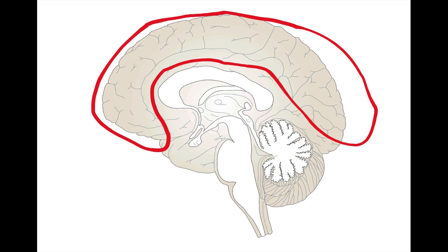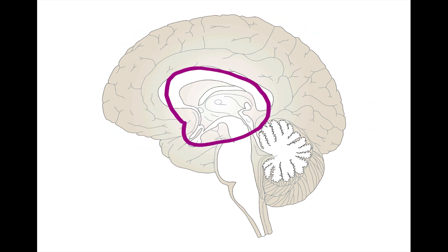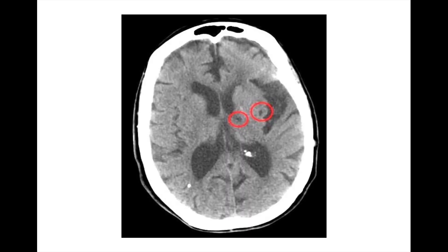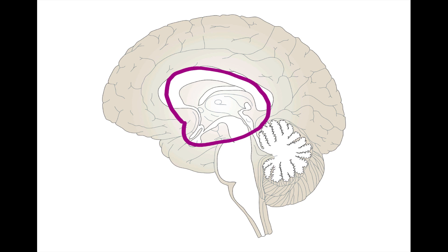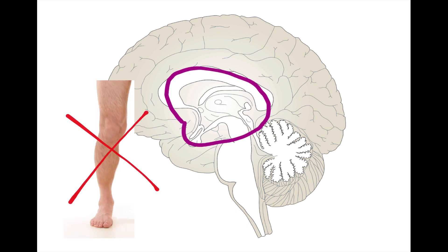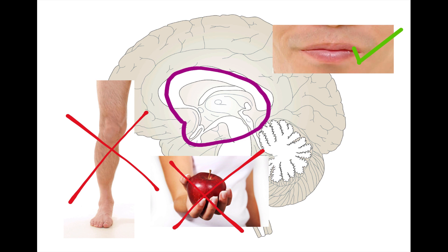Let's move from strokes in the cortex down to strokes in the subcortex. Strokes in the subcortex are often called lacunar strokes, with lacunar coming from the Latin word for lakes or empty spaces — a name that makes more sense when you consider that strokes in the subcortex have a tendency to punch literal holes in brain tissue. Like cortical strokes, lacunar strokes often present with motor deficits and loss of sensation, but the intact nature of cortical functions such as speech and awareness helps to place us firmly in the region of the subcortex rather than the cortex. There are three main forms of lacunar strokes.